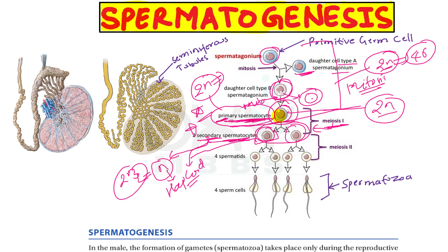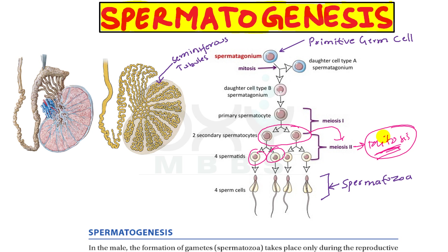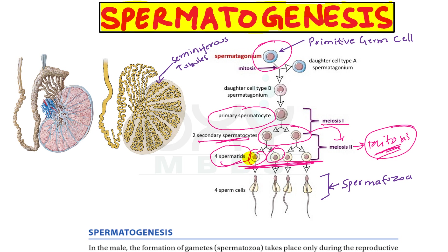Two secondary spermatocytes are formed from one primary spermatocyte. In the secondary spermatocytes, the second meiotic division occurs. This second meiosis is mitosis-like because two cells are formed but there is no reduction in chromosomes or DNA. After the second meiosis, the cells are called spermatids.